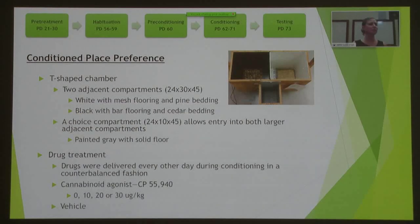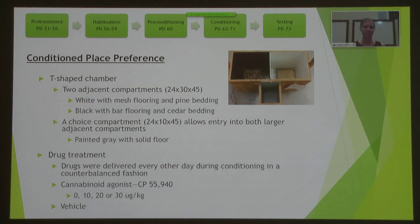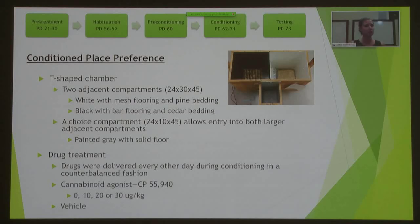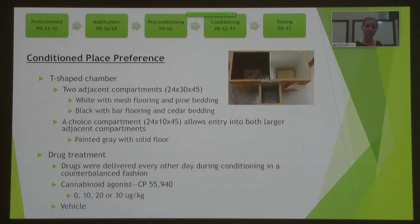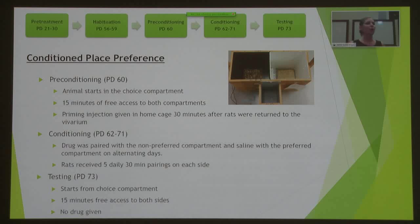So what is conditioned place preference? CPP is a paradigm validated to test an animal's preference for a specific drug — in this case, a cannabinoid agonist called CP55940. We paired this drug with one side of the chamber, either the black side or the white side, and paired the other side with saline.